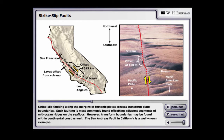Strike-slip faulting along the margins of tectonic plates creates transform plate boundaries. Such faulting is most commonly found offsetting adjacent segments of mid-ocean ridges on the sea floor. However, transform boundaries may be found within continental crust as well.